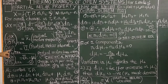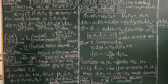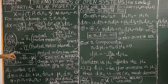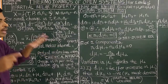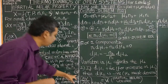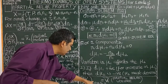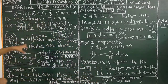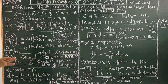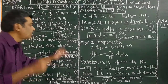If X is Internal Energy, then (∂X/∂Ni) gives the partial molar internal energy of component i. Similarly, we can define partial molar volume, which is (∂V/∂Ni) at constant T, P, and other moles.